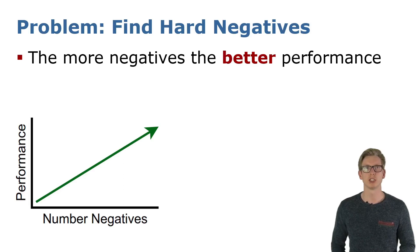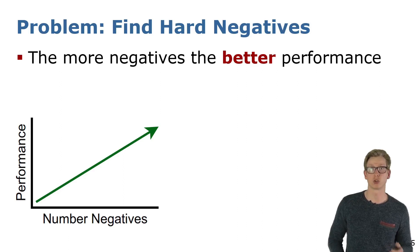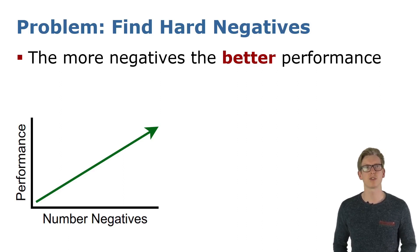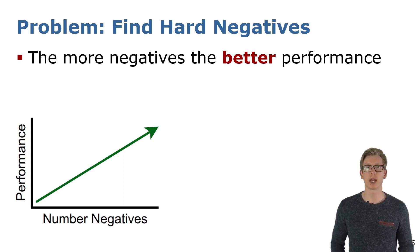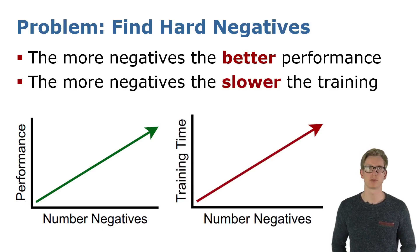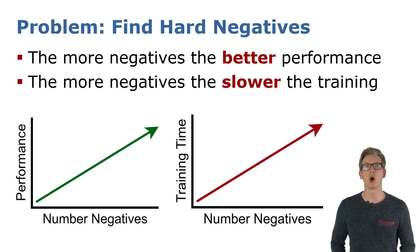Since most locations look completely different from each other, it is very easy to make their descriptors dissimilar. Therefore, it is very important to find hard negatives, which look similar to the query but are actually from completely different locations. Generally, the more negatives we can mine, the better the performance, but also the slower the training time. Many training techniques spend around 80% of the time only for mining the hard negatives, making training very time intensive.